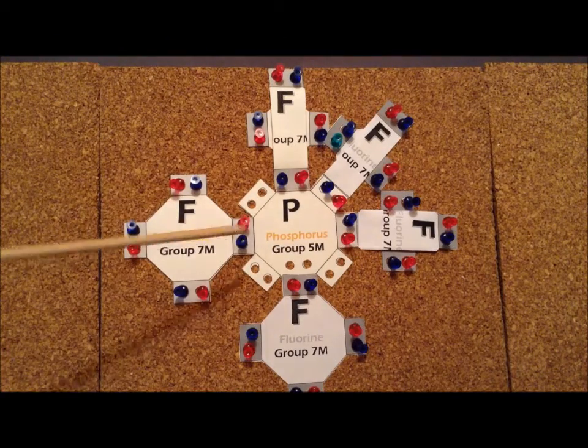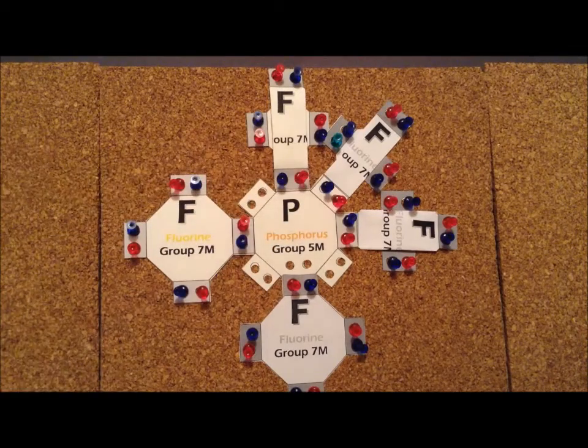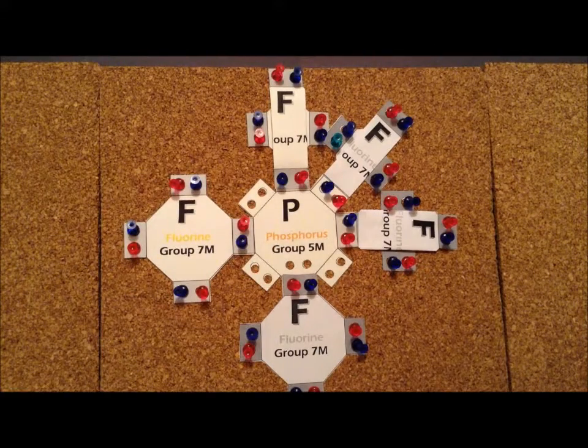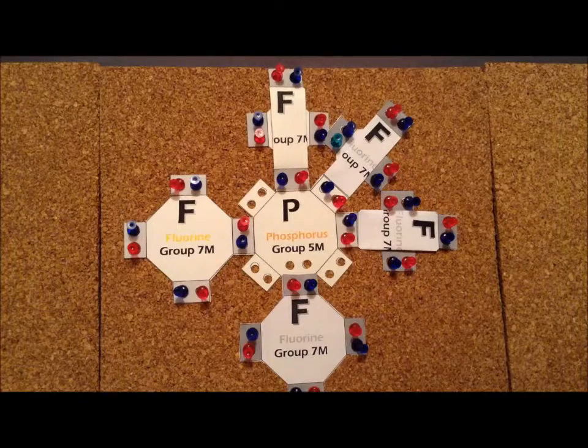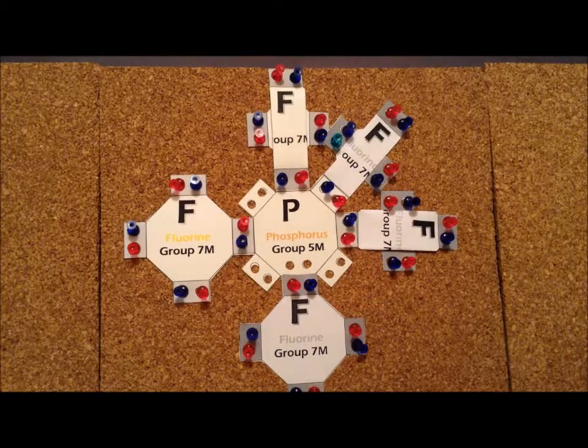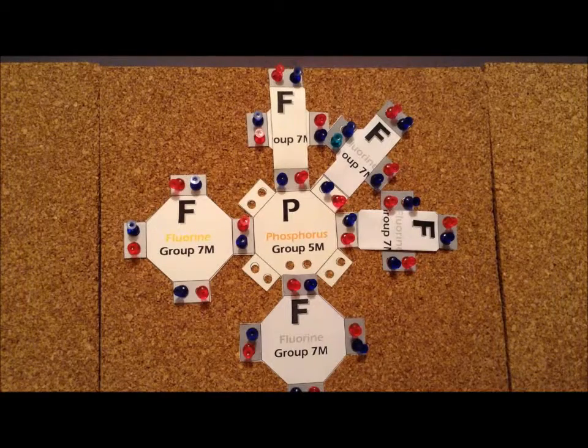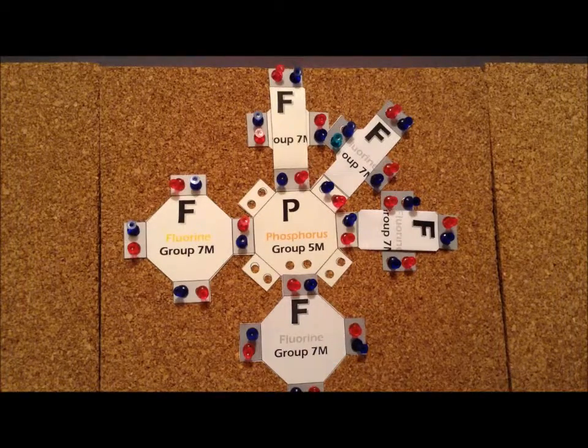So, in the process, around the fluorine, we have two, four, six, eight, ten electrons. And since phosphorus is in the third row, we are allowed to expand the octet. So, here is one of the compounds where phosphorus needs to expand the octet to form the particular compound.